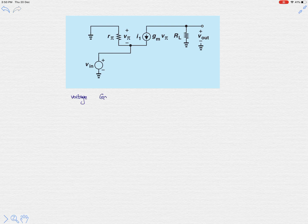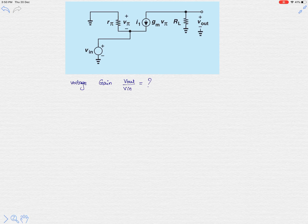Voltage gain is nothing but the output voltage over input voltage. This is the ratio of output voltage to input voltage. So here let's calculate what is the gain of this kind of amplifier topology.